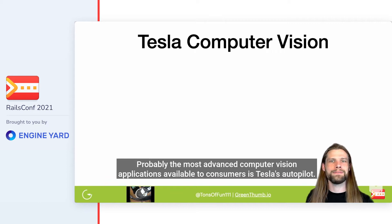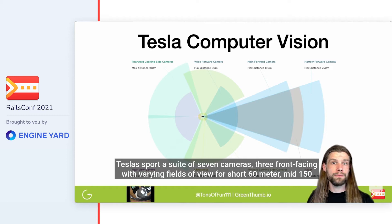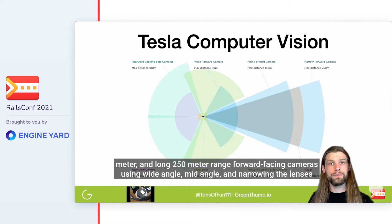Probably the most advanced computer vision applications available to consumers is Tesla's Autopilot. Teslas sport a suite of seven cameras — three front-facing with varying fields of view for short 60-meter, mid-150-meter, and long 250-meter range forward-facing cameras using wide-angle, mid-angle, and narrow-angle lenses.